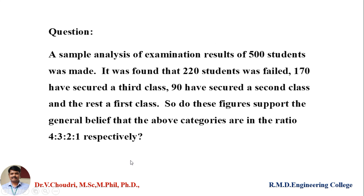Let us see one problem. A sample analysis of examination results of 500 students was made. It was found that 220 students failed, 170 secured a third class, 90 secured a second class, and the rest obtained a first class. Do these results support the general belief that the above categories are in the ratio 4:3:2:1 respectively?